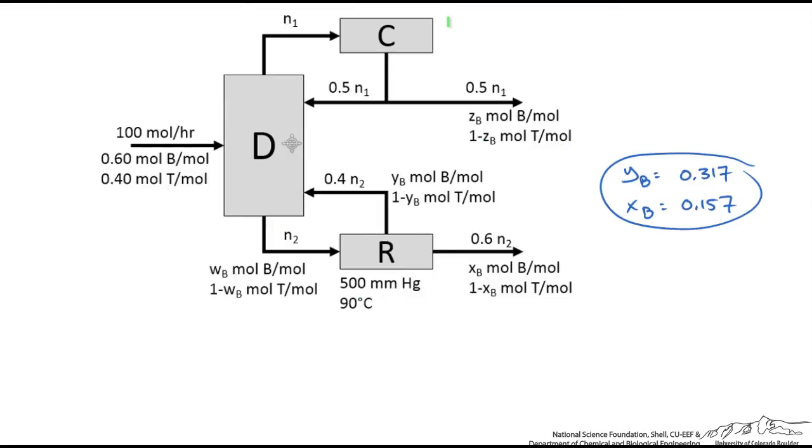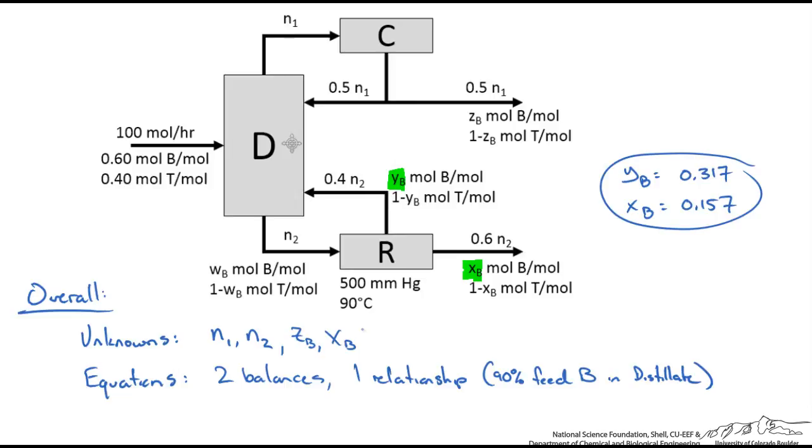We do know we solved for some of the outlet conditions from the reboiler. We solved for XB and YB. So maybe we could revisit our overall material balance. Recall we have four unknowns and three equations. Well we have solved for one of the unknowns, XB. So now we have three unknowns and three equations. Our degree of freedom analysis for an overall balance gives us zero. We could solve for the unknown variables.